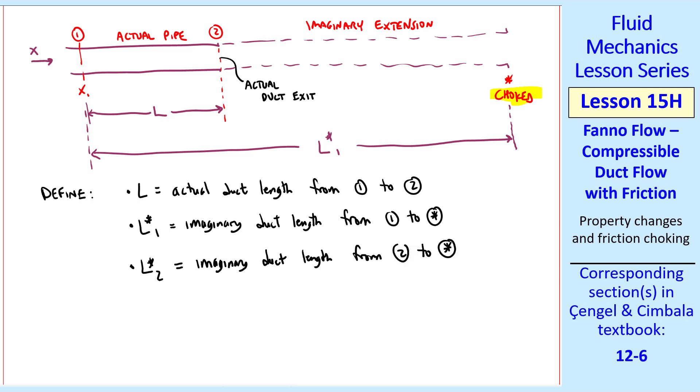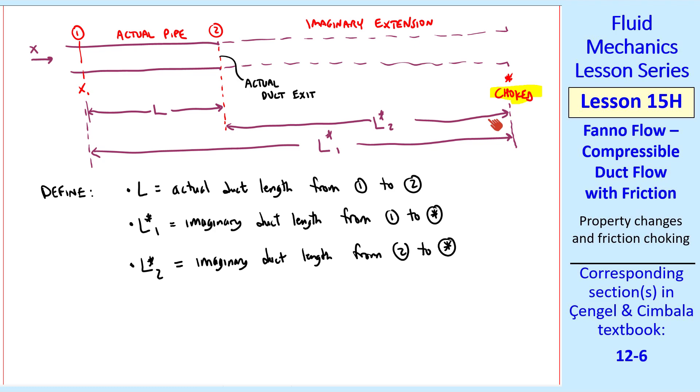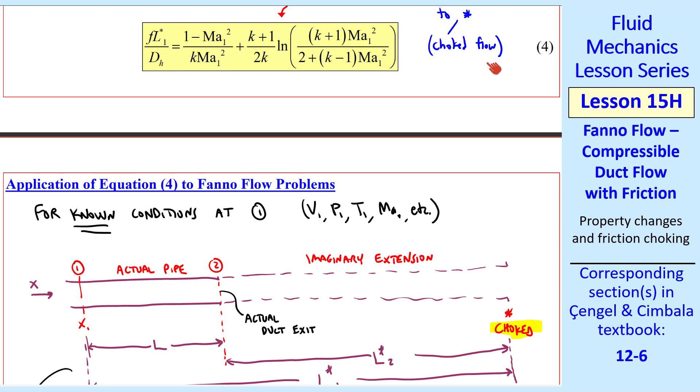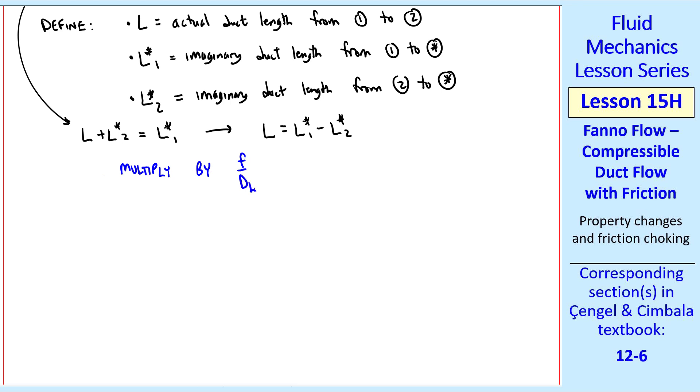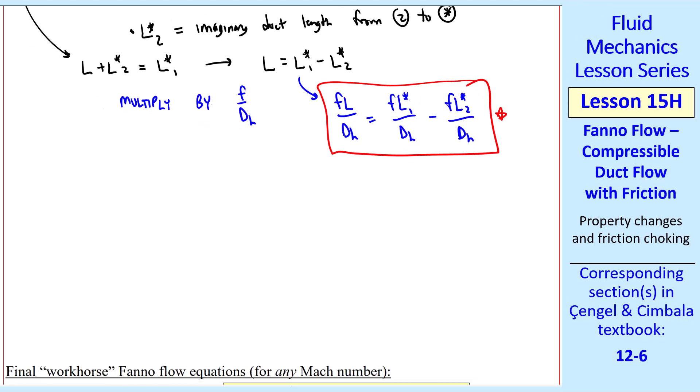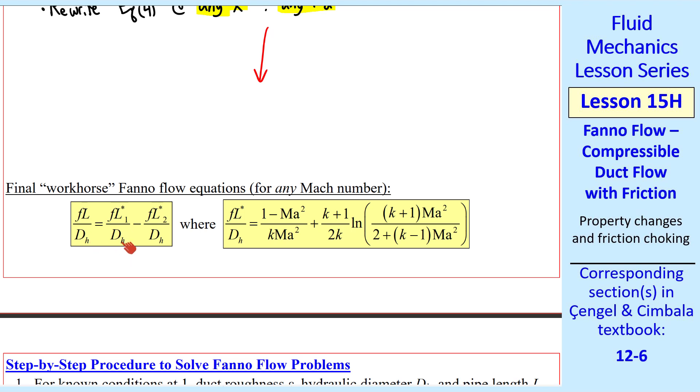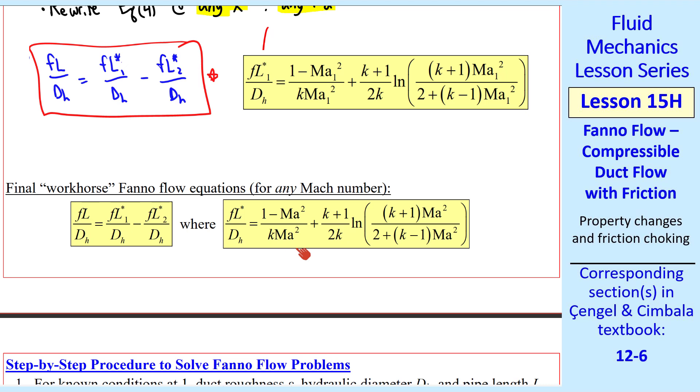Let's define all these L's. L is the actual duct length from 1 to 2, where 2 is the actual duct exit plane. L star at 1 is the imaginary duct length from 1 to star, this entire length. Part of which is real and part of which is an imaginary extension. We can also define an L star 2, which is the imaginary duct length from 2 to star. In other words, if we start here along our imaginary extension, we require length L star 2 to get to the choked location. You can easily see from our dimensions here that L plus L star 2 is equal to L star 1, or L equal L star 1 minus L star 2. Now because we have FL star over DH in our equation 4, we multiply by F over DH. So we have FL over DH equal FL star 1 over DH minus FL star 2 over DH, where remember that we're assuming F is constant throughout the duct and hydraulic diameter is also constant. Finally, we rewrite equation 4 at any X and any Mach number. This leads us to the workhorse equations for Fanno flow, which I summarize here. The equation for FL over DH we just derived, and equation 4 at any Mach number.